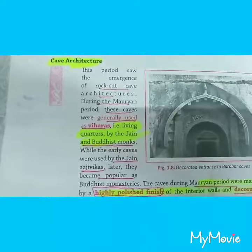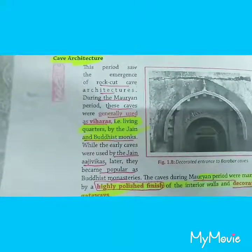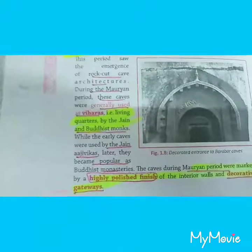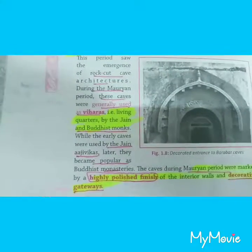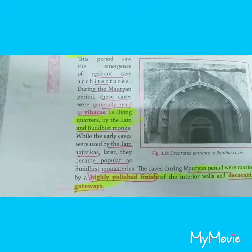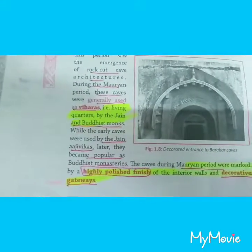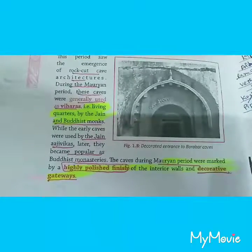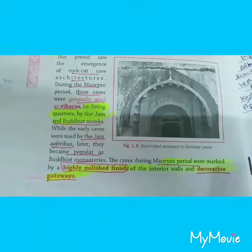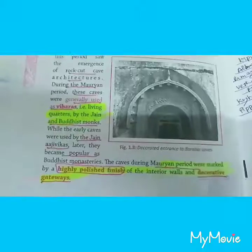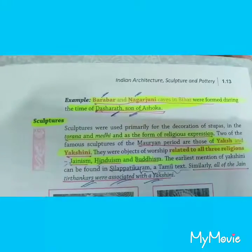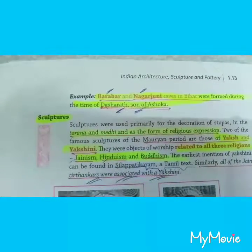In popular art, the Mauryan period saw the emergence of rock cave architecture. These caves were generally used as Viharas — living quarters — by Jain and Buddhist monks. While the early caves were used by the Ajivikas, they later became popular as Buddhist monasteries. Caves during the Mauryan period were marked by a highly polished finish of the interior walls and decorative gateways. Examples include the Barabar and Nagarjuni caves in Bihar, formed during the time of Dasharatha, son of Ashoka.